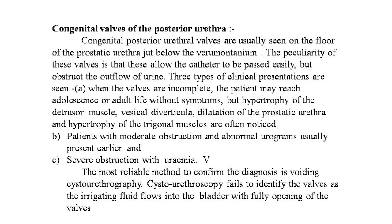The next anomaly is the congenital valves of the posterior urethra. Congenital posterior urethral valves are usually seen on the floor of the prostatic urethra just below the verumontanum; occasionally one may see these valves above the verumontanum. The peculiarity of these valves is that they allow a catheter to be passed easily but obstruct the outflow of urine.